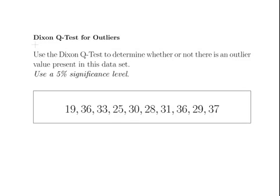In this video we are going to look at the Dixon Q-Test and what we are going to do is use the Dixon Q-Test to determine whether or not there is an outlier present in this dataset here. Just as a remark we are going to use a 5% level of significance.